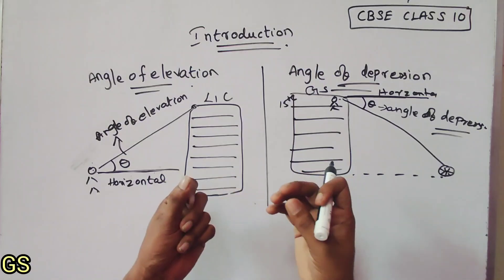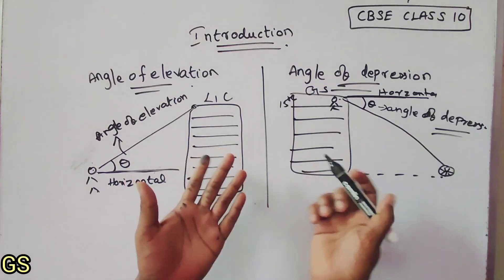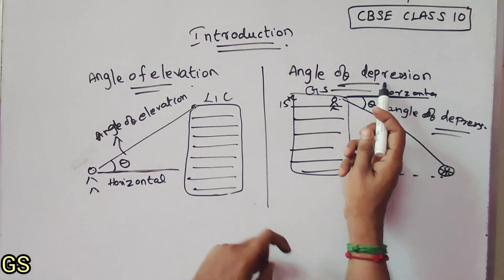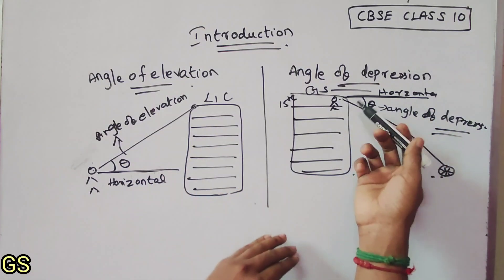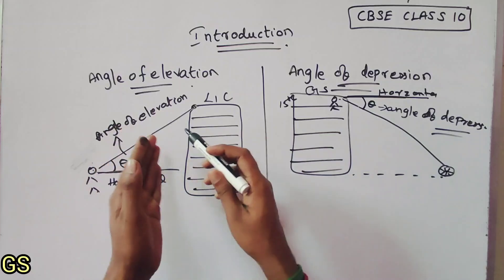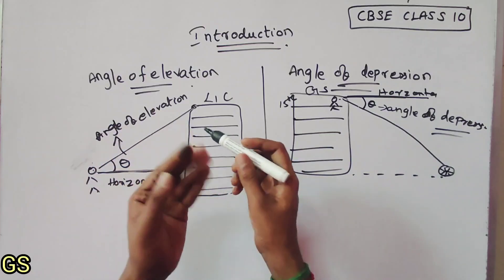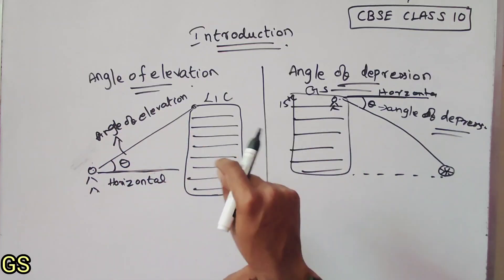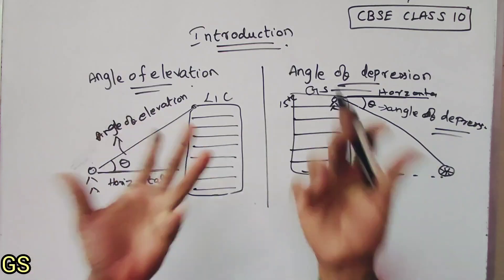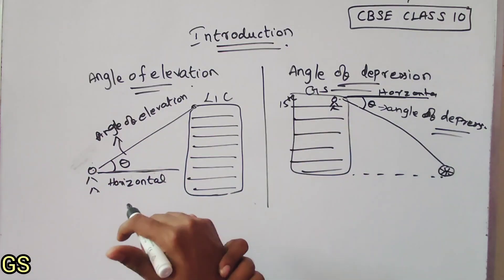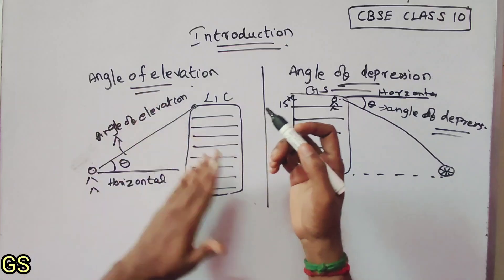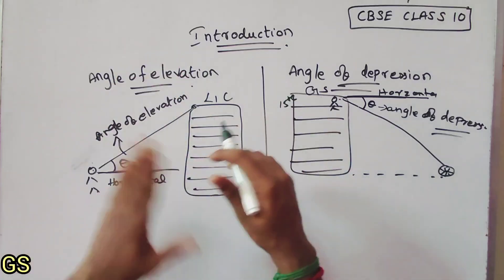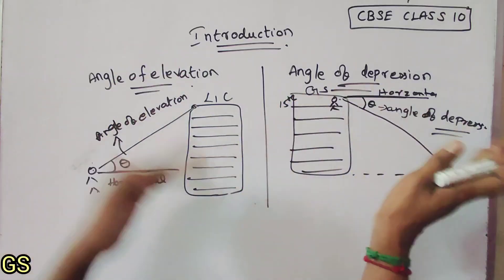So, elevation versus depression: elevation is looking up — you can think of an elevator or a lift going up to the top. The top looking down is the depression.